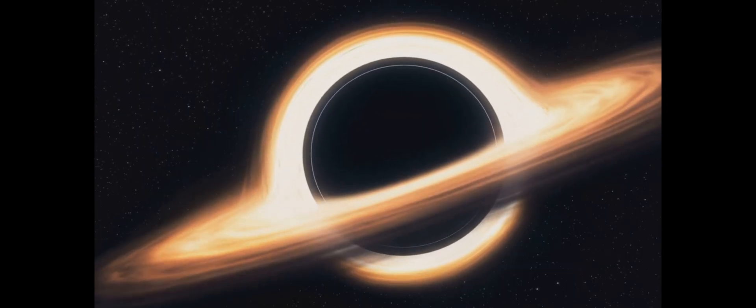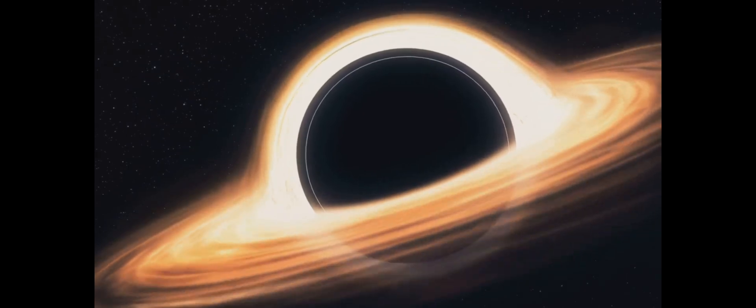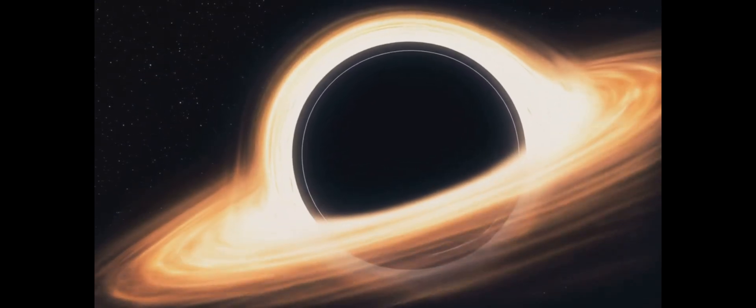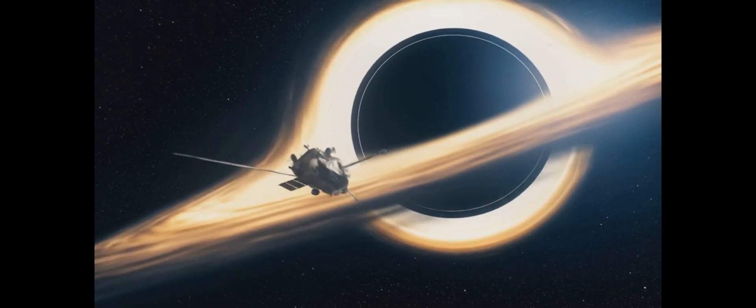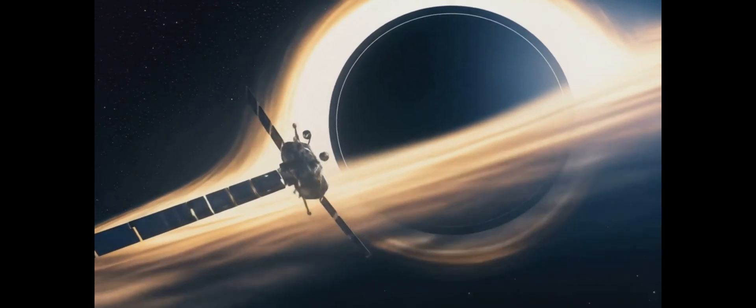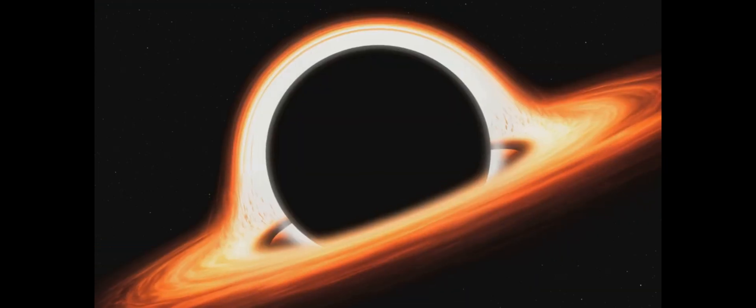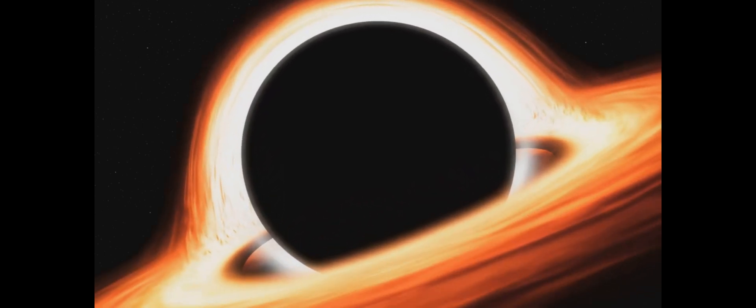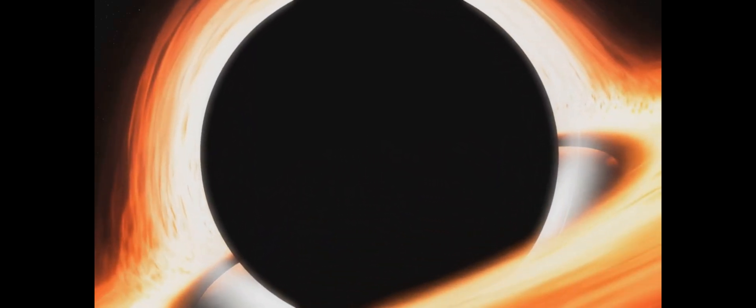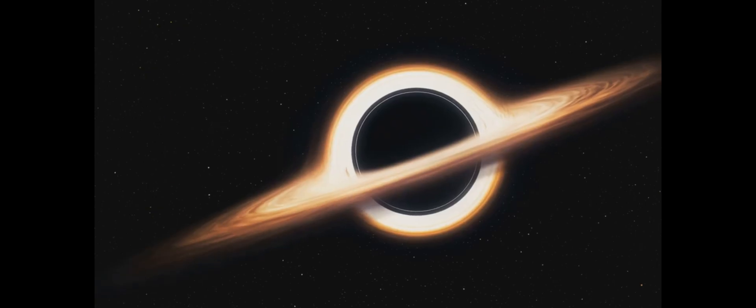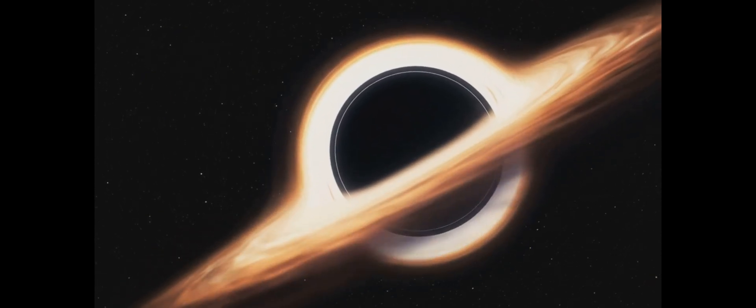As we approach a black hole, we encounter a boundary known as the event horizon. This isn't a physical surface you could touch or see, but rather a point of no return. It's the threshold where the black hole's gravitational pull becomes so strong that nothing, not even light traveling at 300,000 kilometers per second, can escape. It's like the ultimate cosmic waterfall. Once you go over the edge, there's no coming back.